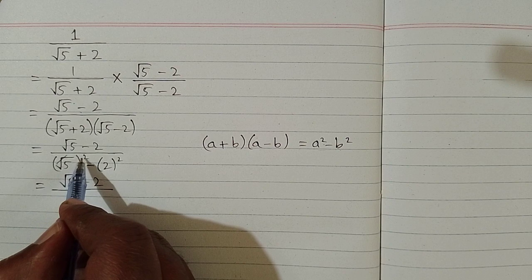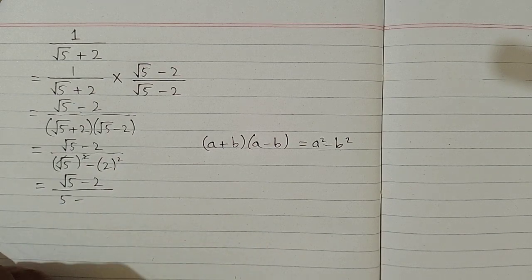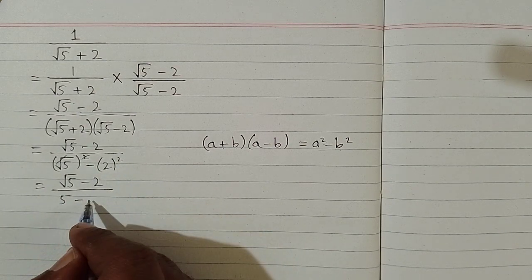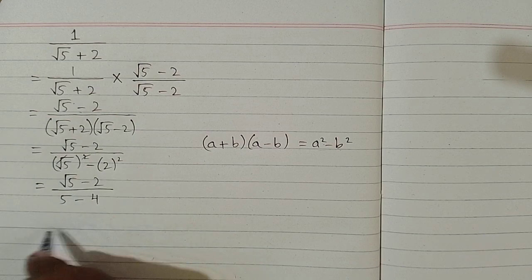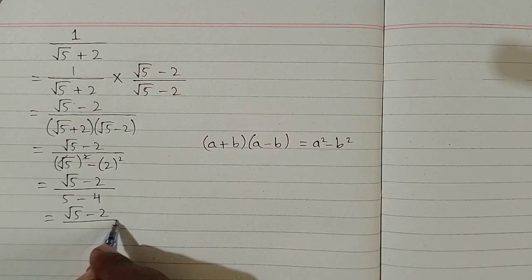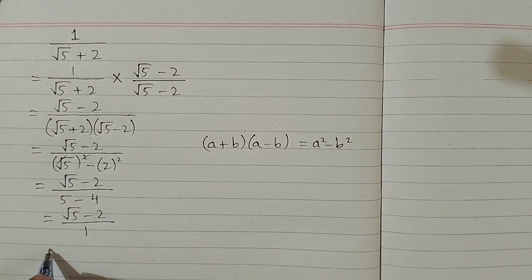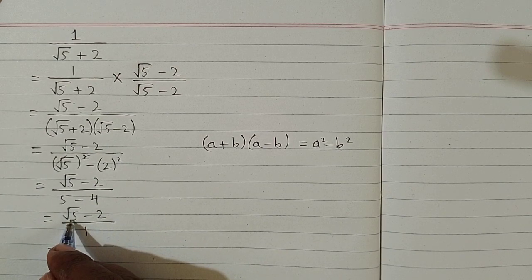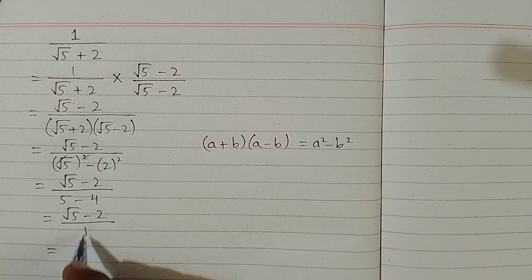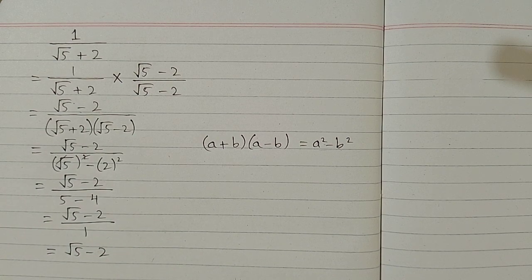The square root and the square cancel, so we have 5, and square of 2 is 4. So square root of 5 minus 2 upon 5 minus 4 equals 1. And square root of 5 minus 2 divided by 1 is simply square root of 5 minus 2.